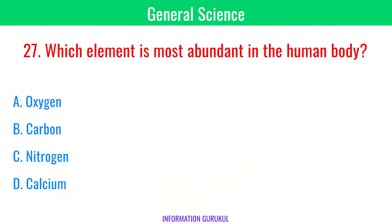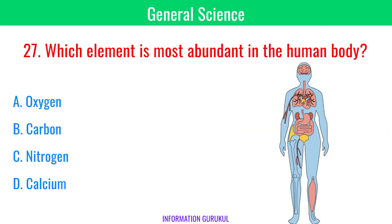Which element is most abundant in the human body? Oxygen.